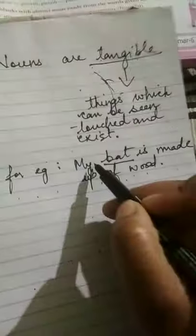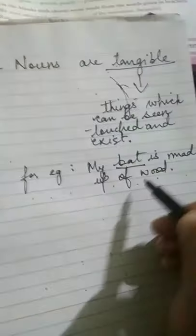For example, my bat is made up of wood. Here we are talking about the bat and the material used to make it. My bat is made up of wood, so this wood is a material noun.